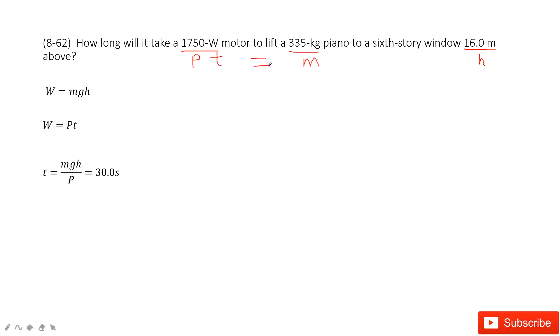Work also equals mass times G. This is gravity times the distance it covered. So P times T equals M times G times H. Agree? Yes.